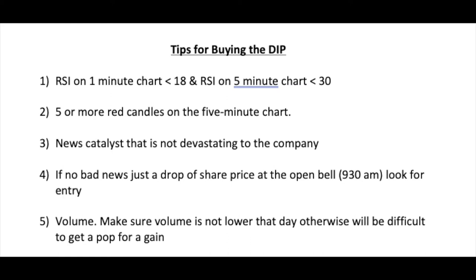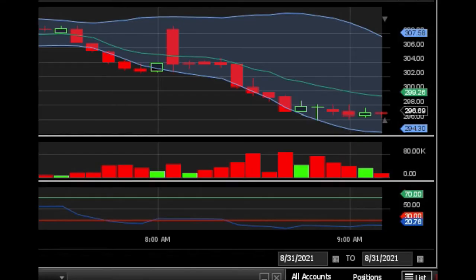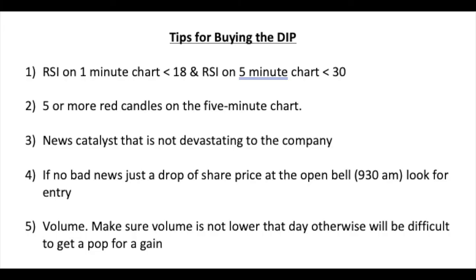Here are my tips for buying the dip. Tip one: I like to look at the RSI on the one-minute chart and the five-minute chart. I purchase when the RSI is less than 30 on the five-minute chart, and I like the RSI on the one-minute chart to be at least less than 18 to 20. Tip two: I like to look for five or more red candles. As you can see here, there are multiple five-minute red candles coming down — that's when I would look to make my purchase, around 296 to 297.